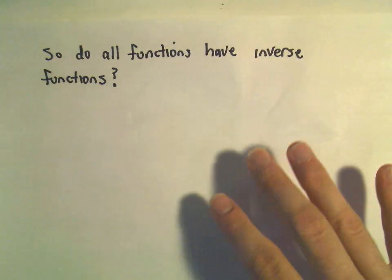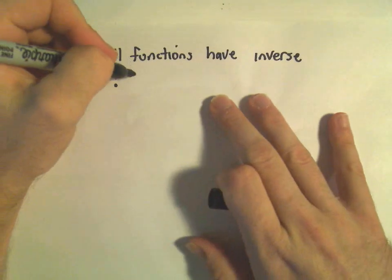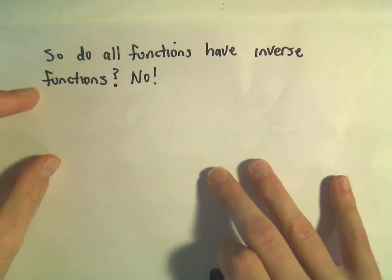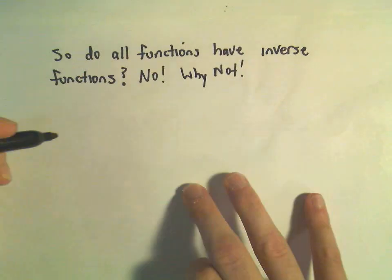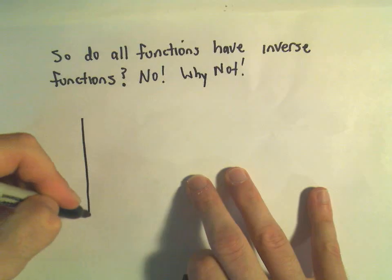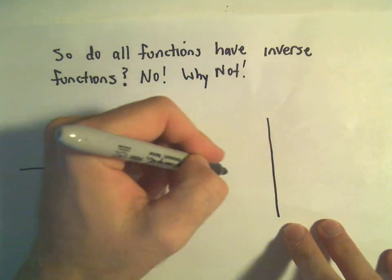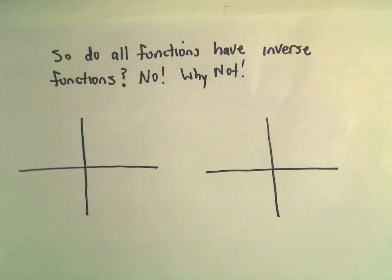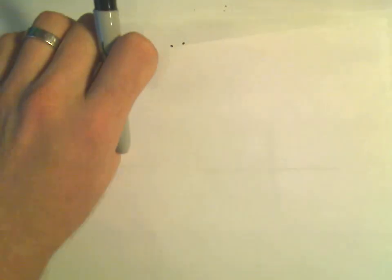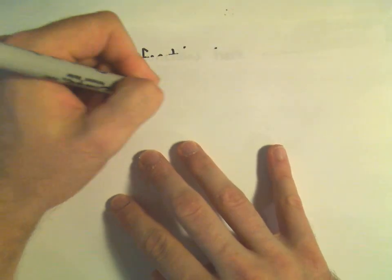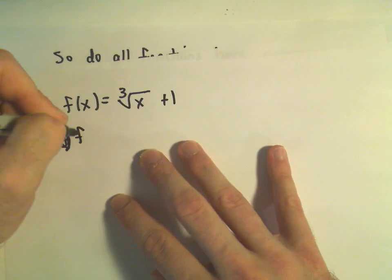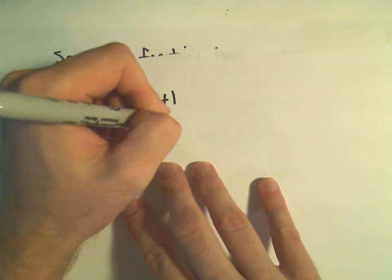Do all functions have inverses? We said no. Let's revisit our last example real quick — there's one more little idea worth pointing out. Notice we had our function f of x, which was the cube root of x plus one, and we called the other f inverse of x, which was x minus one cubed. In the first problem, we started with the number 8, plugged in 8, got the cube root of 8 to be 2, and then 2 plus 1 was 3.